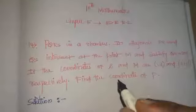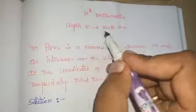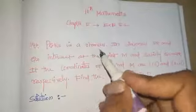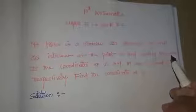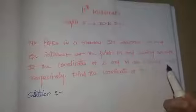Hello dear students, this is Maxson. Now I will teach about 10th mathematics chapter number 5, exercise 5.5.2, question number 14. PQRS is a rhombus. Its diagonals PR and QS intersect at point M and satisfy QS equal to 2PR. The coordinates of S are (1,1) and M is (2,-1). Find the coordinates of P.